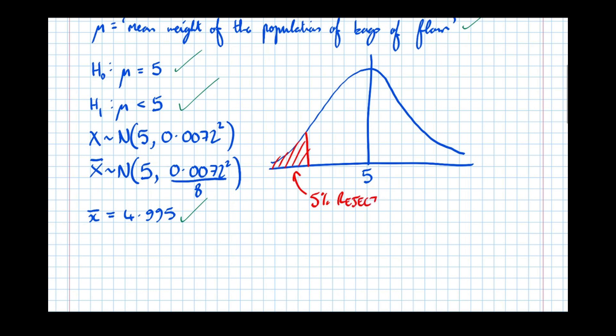We're testing for a decrease. That basically means that anything in the bottom 5% of the normal distribution here gets rejected. We want to see where 4.995 lies in relation to this. Very similar method to our binomial hypothesis test.